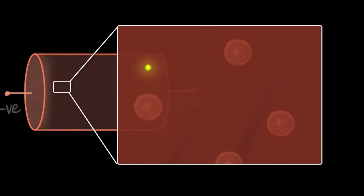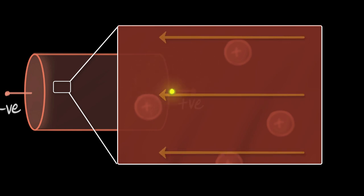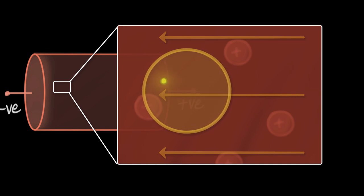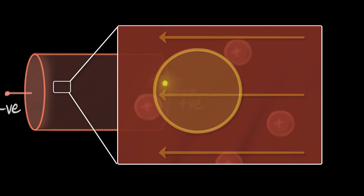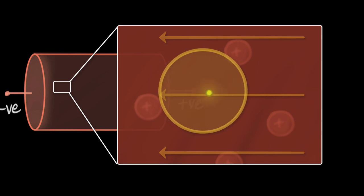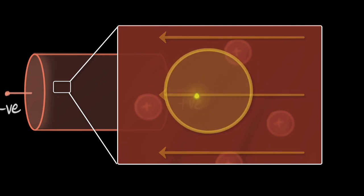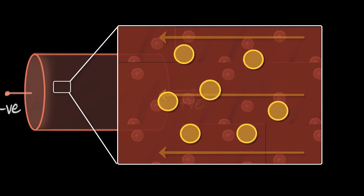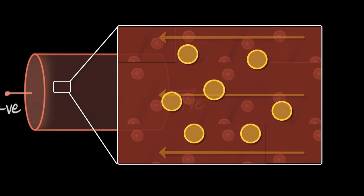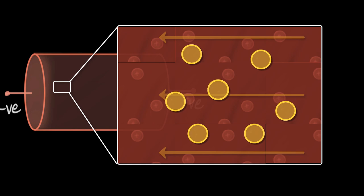But when you hook it up to a battery, there's an electric field that gets set up, which starts pushing the electrons towards the positive terminal. You will see that the electrons are slowly and steadily drifting towards the positive terminal with an average constant velocity. This average velocity is what we call the drift velocity. We can assume that all electrons are moving with the same velocity, and we've talked a lot about this drift velocity in a previous video, so feel free to go back and check that out.